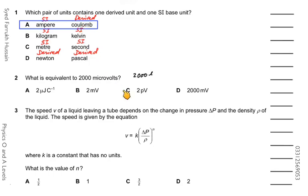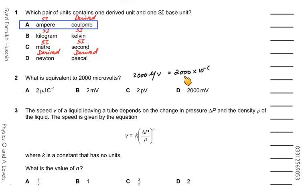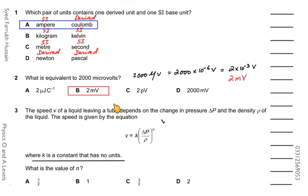In the next question, 2000 microvolts is given. The symbol for micro represents exponent minus 6, so substituting gives 2000 × 10⁻⁶ volts. After simplification this becomes 2 × 10⁻³ volts, and since exponent minus 3 is milli, the answer is 2 millivolts.